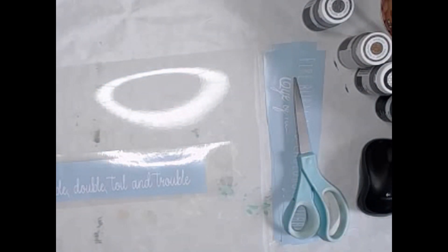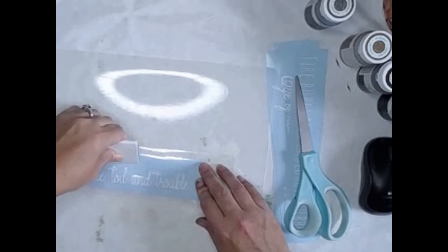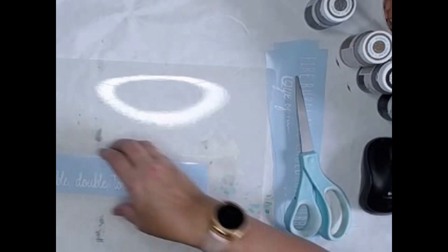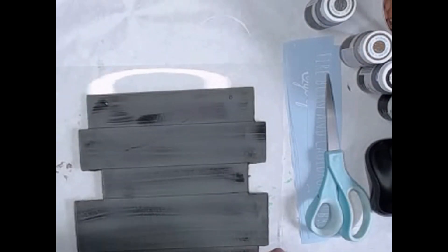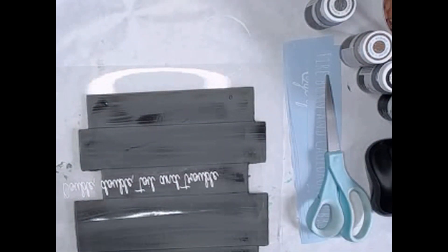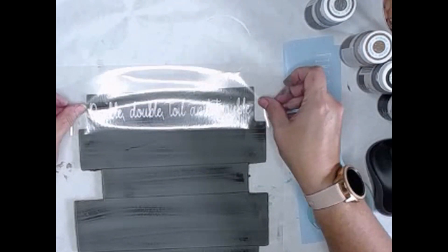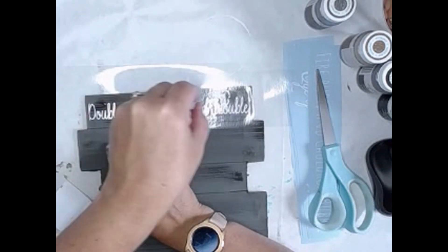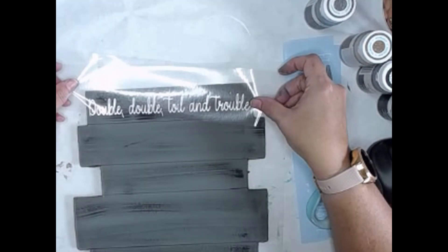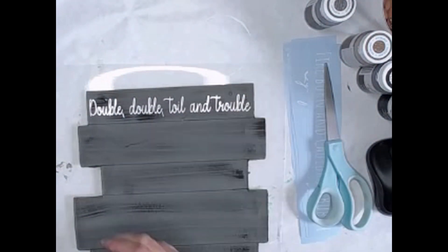Now I'm going to take a piece of transfer tape, and I'm going to make sure that the vinyl is really well adhered to the transfer tape itself. I'm going to peel off the backing, and then I'm going to place it onto the top part of the board. I'm going to do this for every line of the board until I have all the vinyl stuck down.